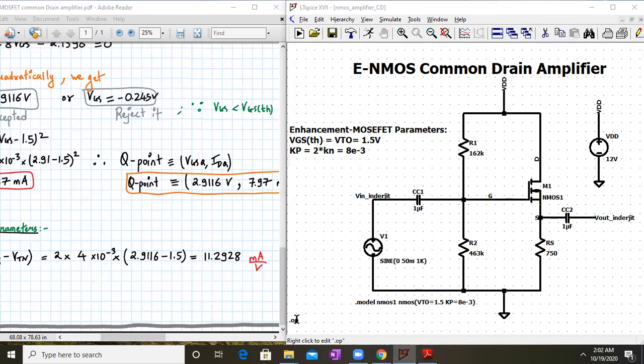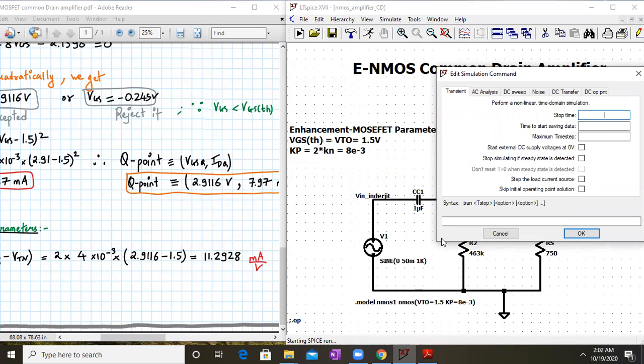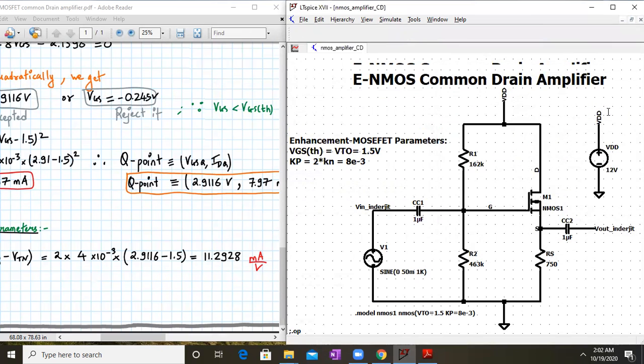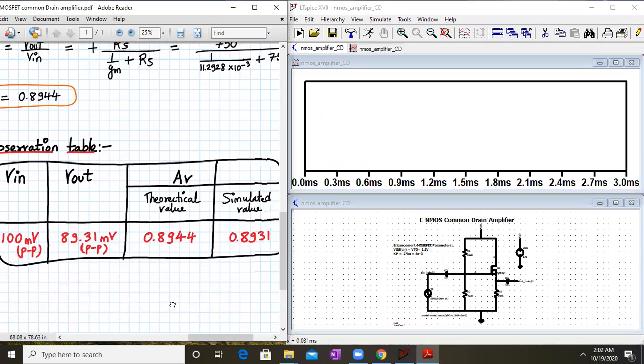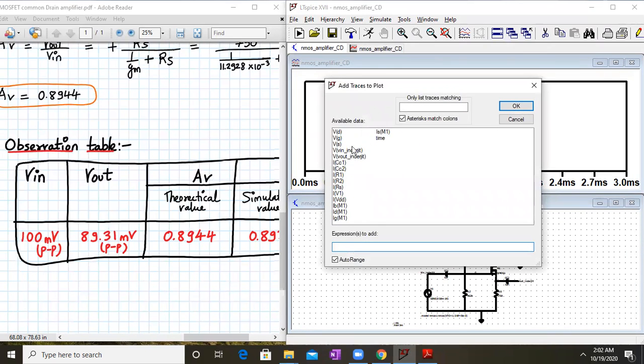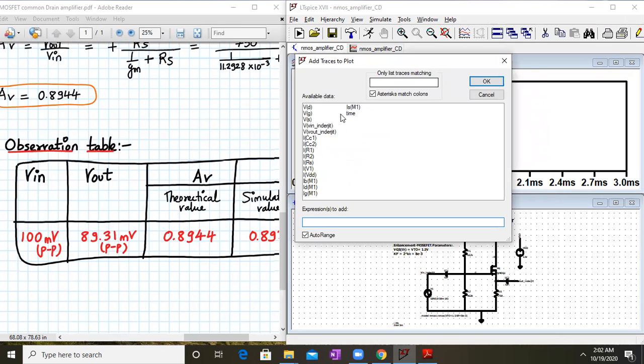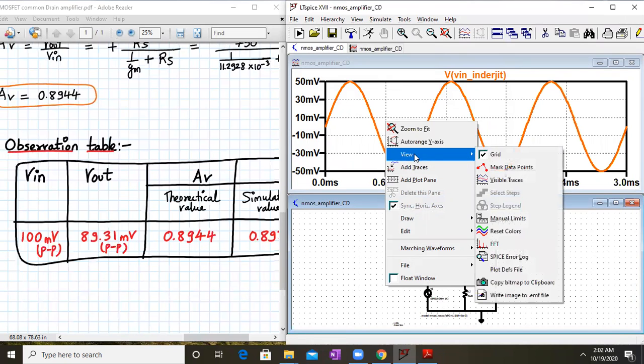Now let's test the input-output characteristics with transient analysis. I'll go to simulate and run. For timing period, the frequency is 1 kHz, so ideally one millisecond, but I'll give it more to see multiple cycles. A blank screen appears - now I'll plot the waveforms.